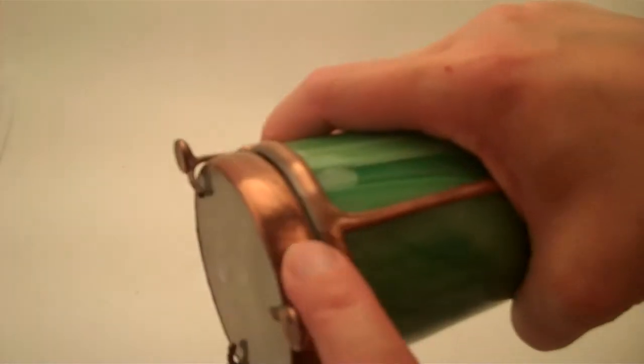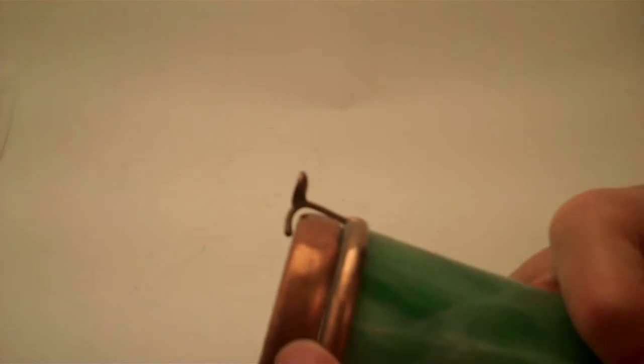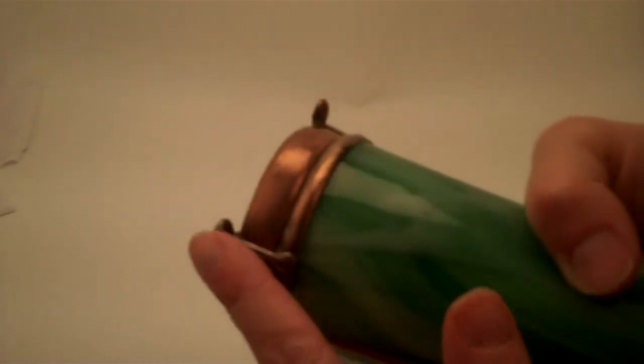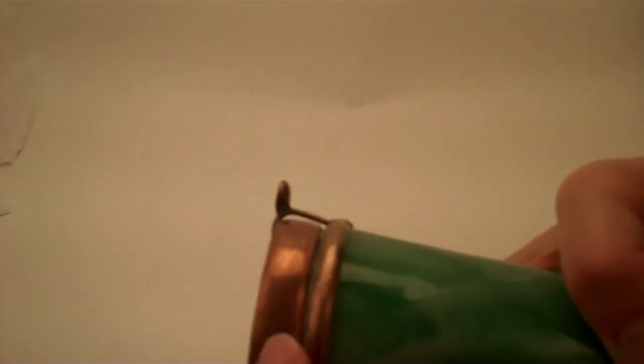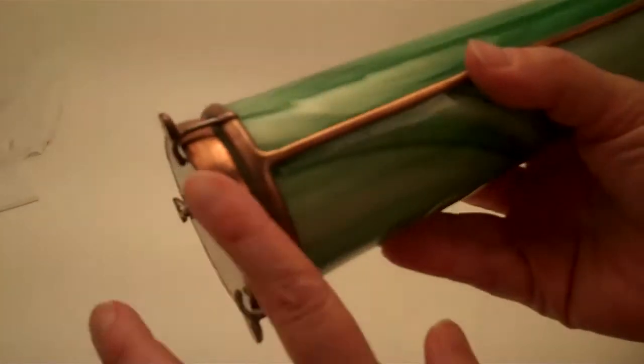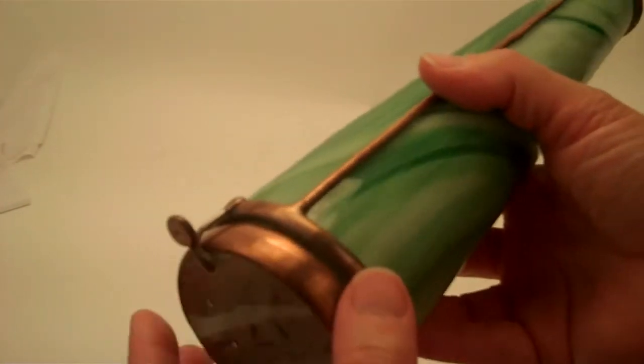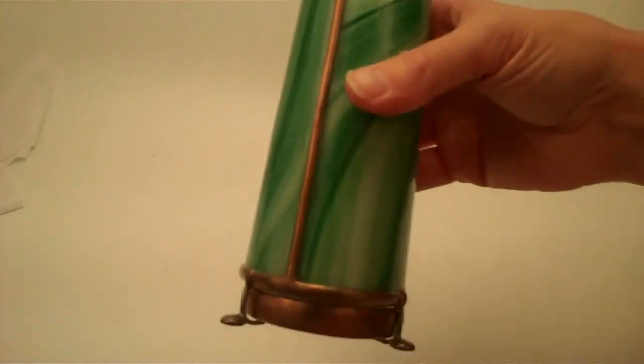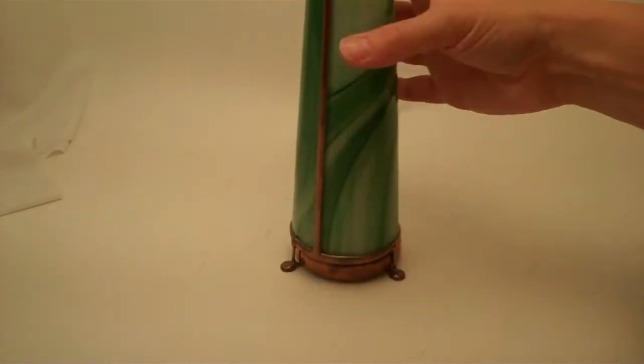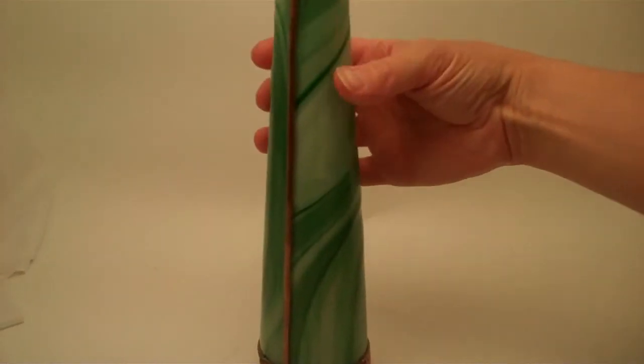Charles has hand soldered the exterior barrel of the chamber as well as the feet and fittings for this kaleidoscope with a traditional stained glass copper foil technique.